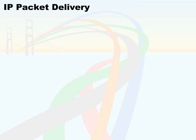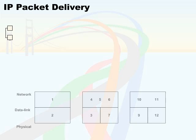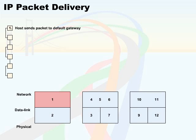Let's look at the IP packet delivery process. A host will first send a packet to its default gateway. The packet will then be placed in a frame. We're dealing with the network and the data link portions of the OSI model, so we are actually sending data to the default gateway, which is usually our closest router.